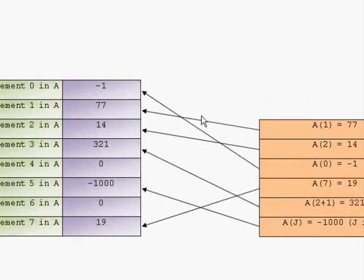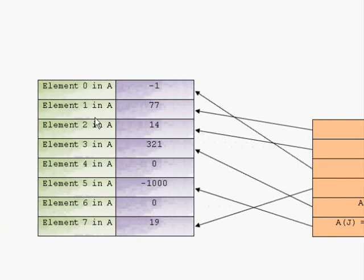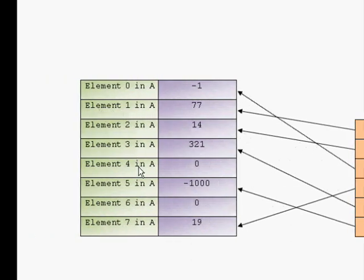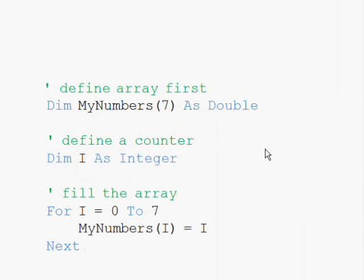This is basically how you fill the array. Reading a value works the same way — if you want to get the value at the fourth location, you simply write A(4) with the bracket notation.